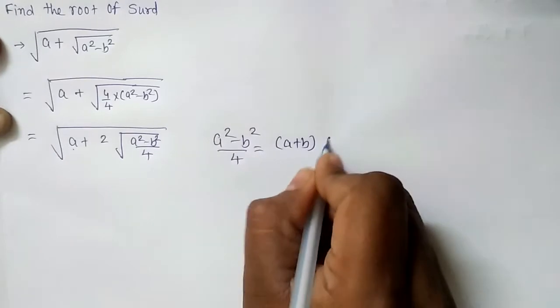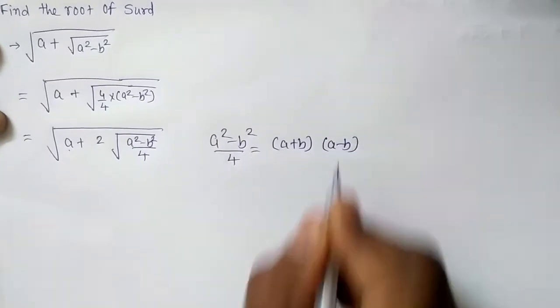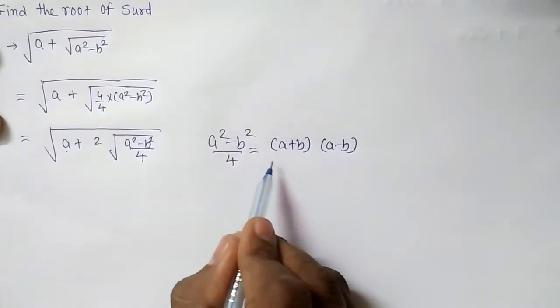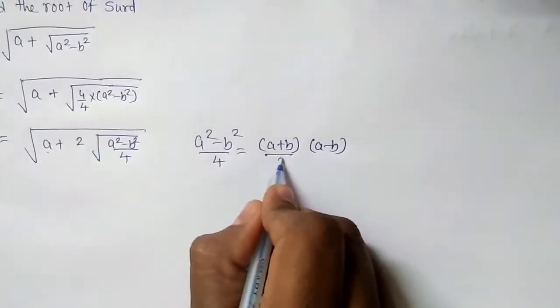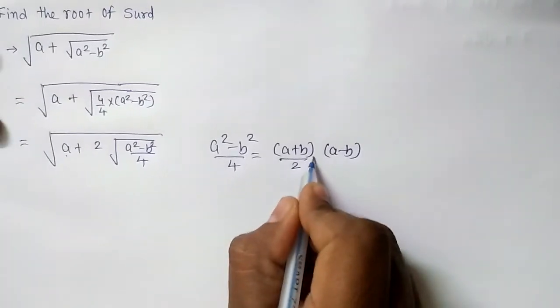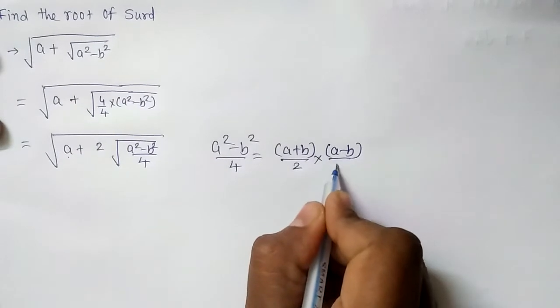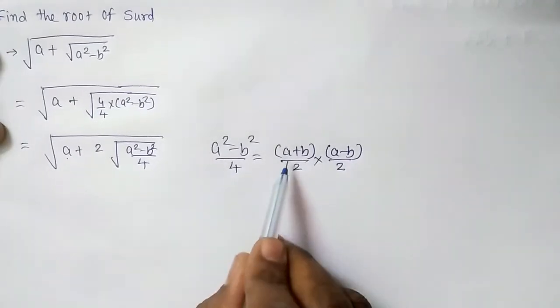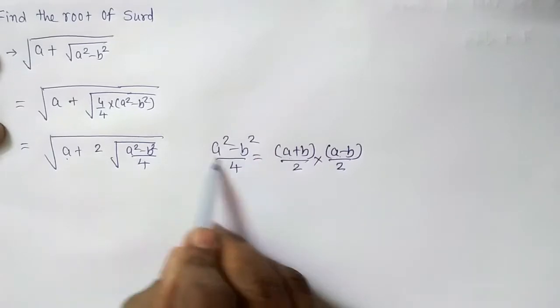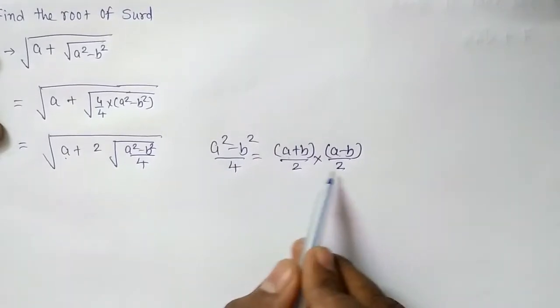That is a plus b and a minus b. I will put 2 to this particular denominator and denominator of this will be 2. So it is a plus b into a minus b will be a square minus b square and 2, 2s are 4.